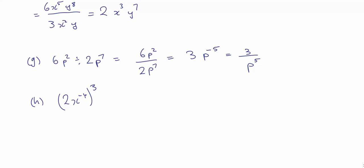Finally, h to the minus 4, all cubed. Using the power rule for indices, that would be 2 cubed times x to the minus 4 times 3, giving minus 12. 2 cubed is 8, so we could write 8x to the minus 12, or 8 over x to the 12.